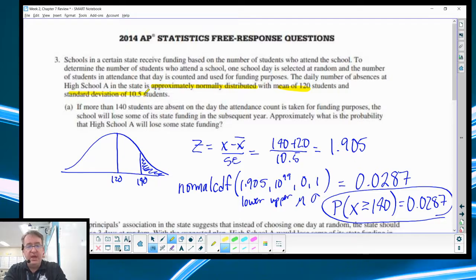So let's see what question A brings us. If more than 140 students are absent on a day that the attendance is counted for funding purposes, the high school will lose some of its state funding for the subsequent year. Approximately, what's the probability of high school A will lose some of its state funding? So notice here, I've got the normal curve because they said it is approximately normally distributed. That is important. Now, you can't use highlighters on the test. However, you can use blue and black pens. So I give my students blue pens so that they're writing in pencil and they're highlighting information in pen.